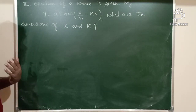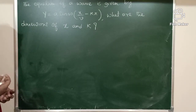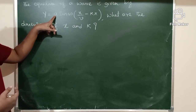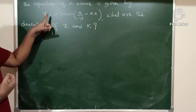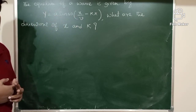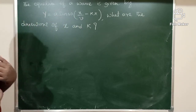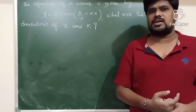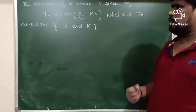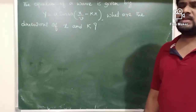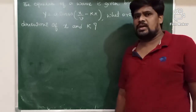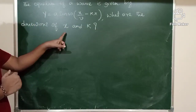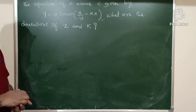They have not given any information regarding the terms. Generally, V is called velocity of a wave, A is called amplitude, and Y is called displacement of a particle of a wave. The wave equation is given and they are asking you to determine the dimensional formula of X as well as K.